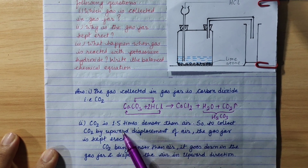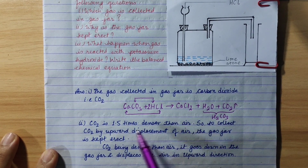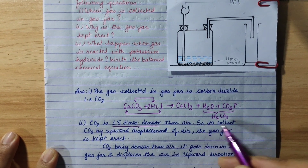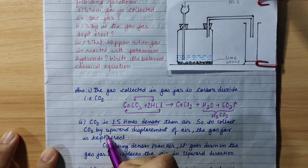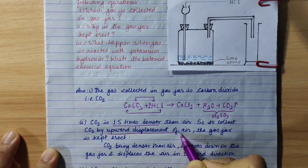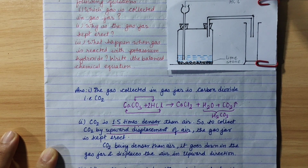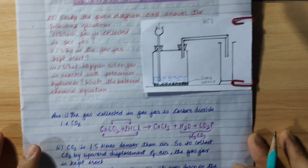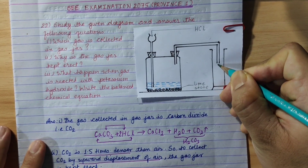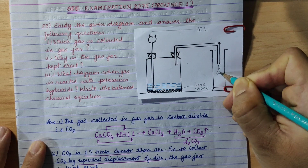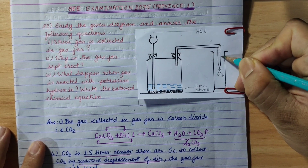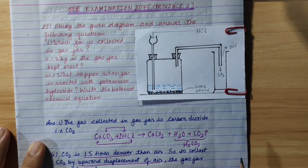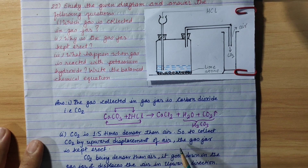CO2 is 1.5 times denser than air. So to collect this gas, we use the method of upward displacement of air. To collect the gas by upward displacement of air, the gas jar is kept erect.